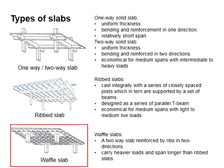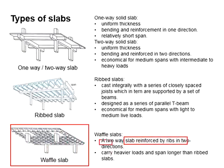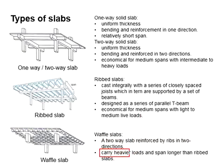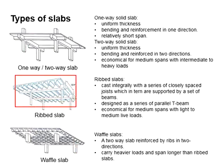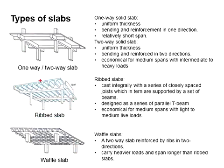The waffle slab has two-way slab reinforced by ribs in two directions. It carries heavy loads and can stretch to a longer span than the rib slab. It can be simply said that these two slabs are rather identical — only that the rib slab is more towards one-directional loads and the waffle slab can handle two-directional loads.